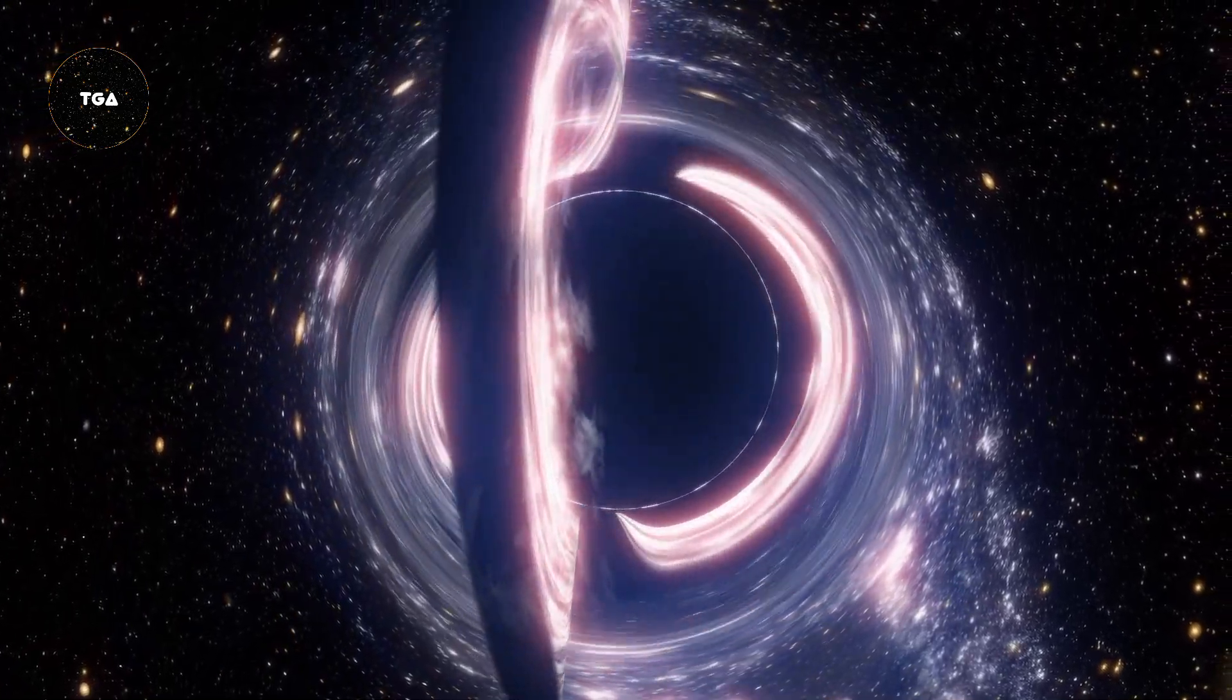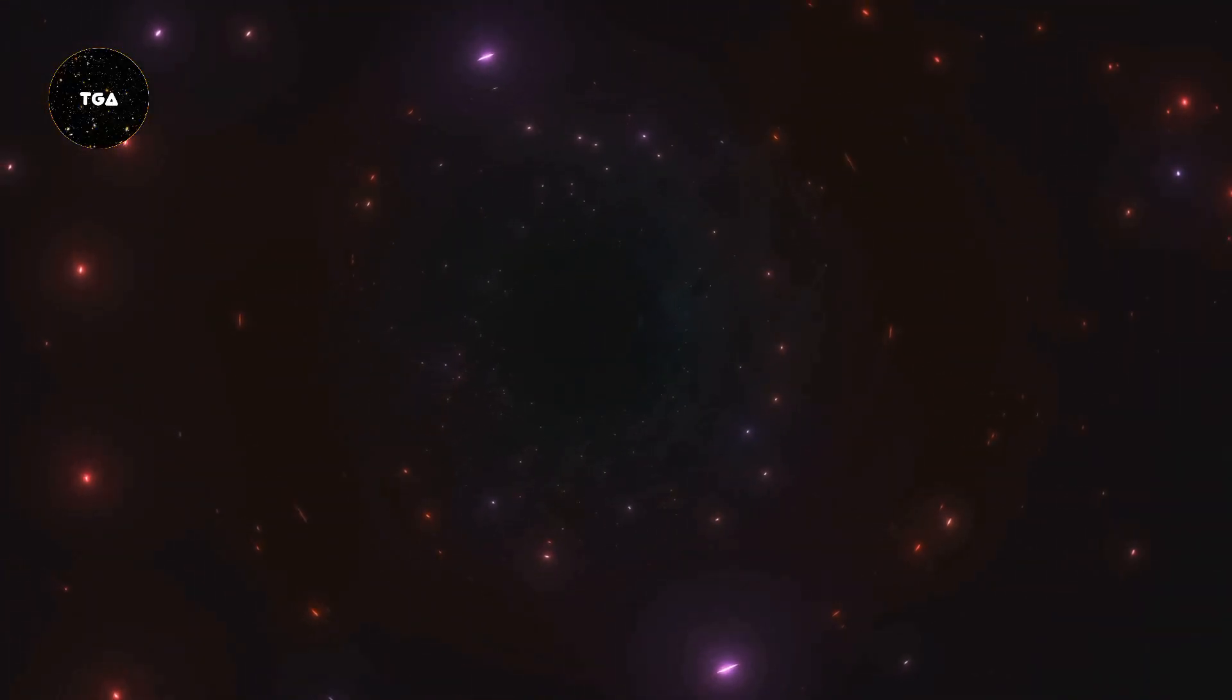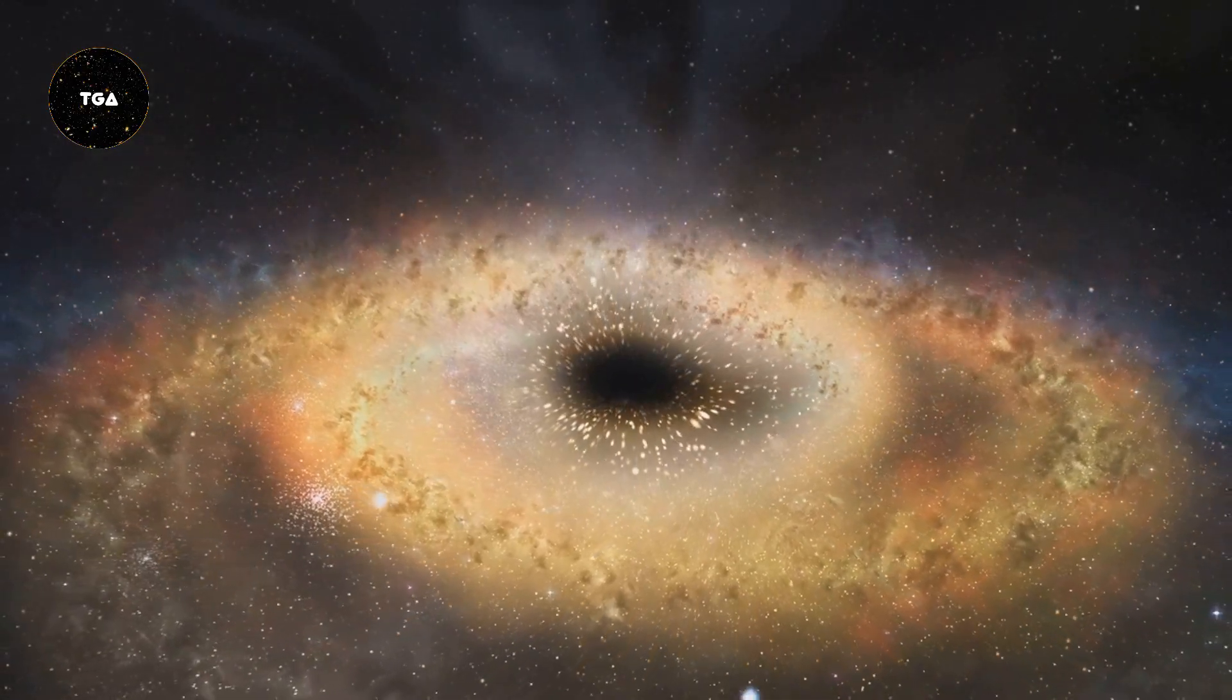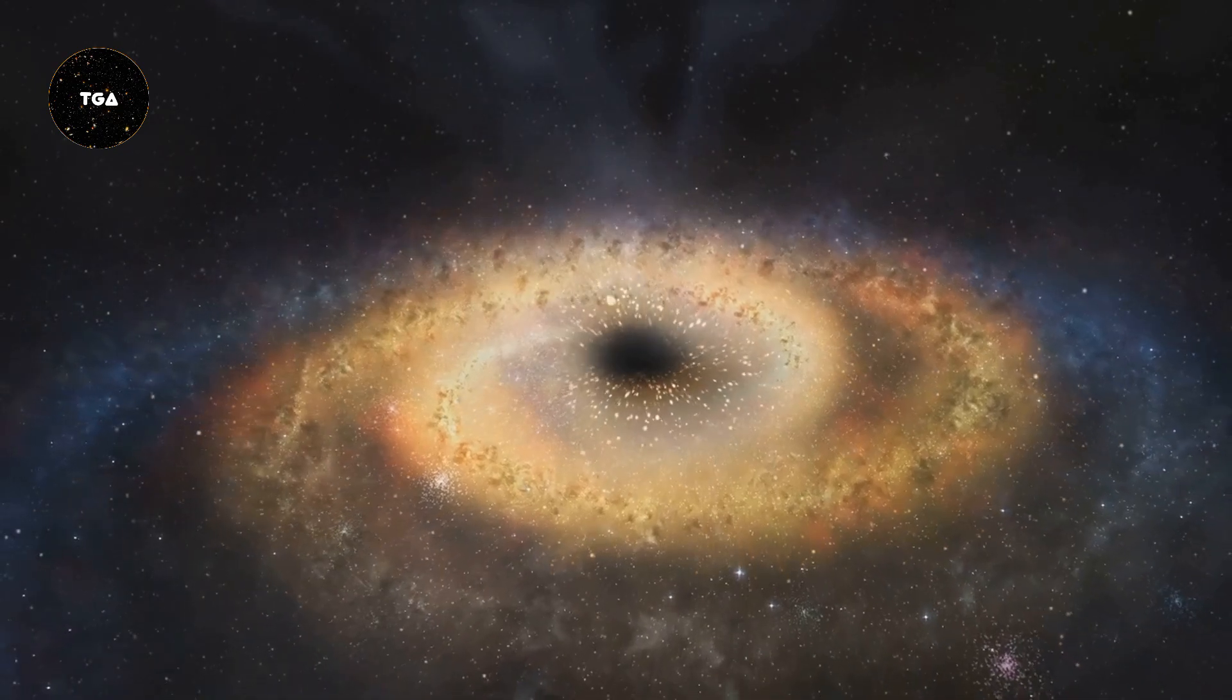Intermediate black holes are more mysterious. They are thought to be between 100 and 10,000 times the mass of the sun. Supermassive black holes found at the centers of galaxies can be millions or even billions of times the mass of the sun.